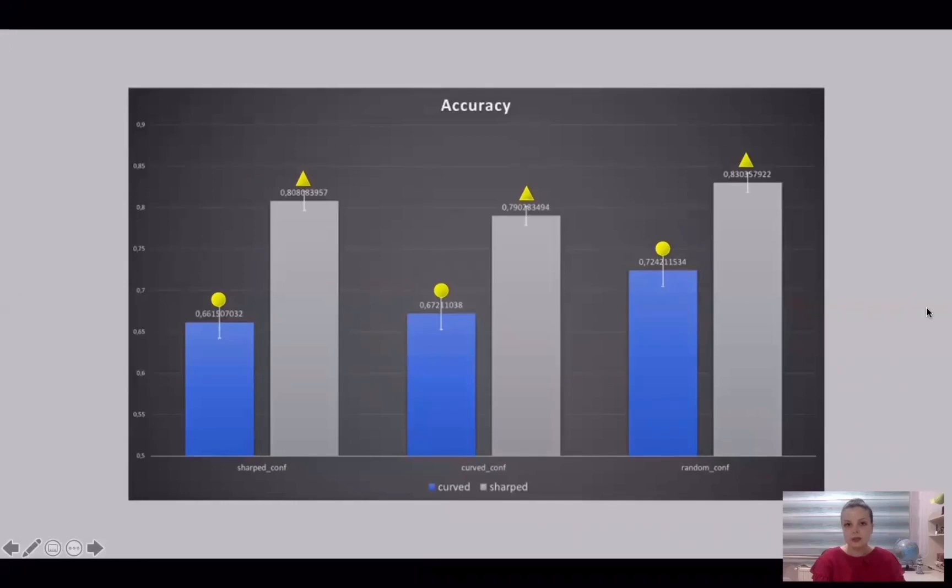Accuracy analysis replicates findings from the first experiment. Performance was obviously better either in sharp-edged contour and random configural trials.